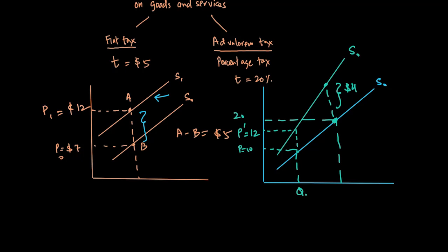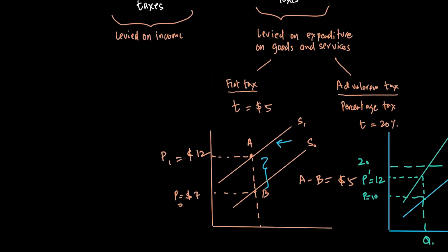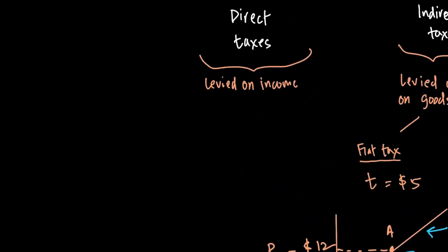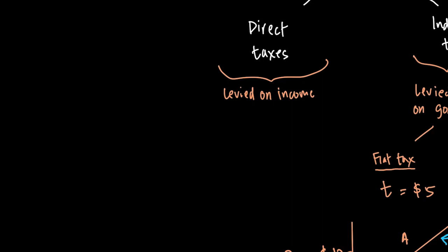When we look at taxes, indirect taxes can be flat or ad valorem, but let's go back to direct taxes. Direct taxes can be progressive, proportional, or regressive in nature.